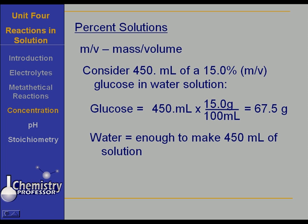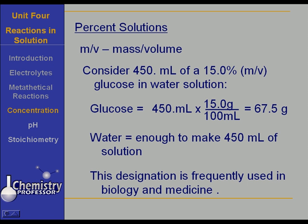The key is, in a mass-volume solution, it is fifteen — or whatever percentage — grams per hundred milliliters of solution. This designation is frequently used in biology and medicine. For example, a five percent glucose solution is a five percent mass-volume glucose solution, containing five grams of glucose for every one hundred milliliters of solution.